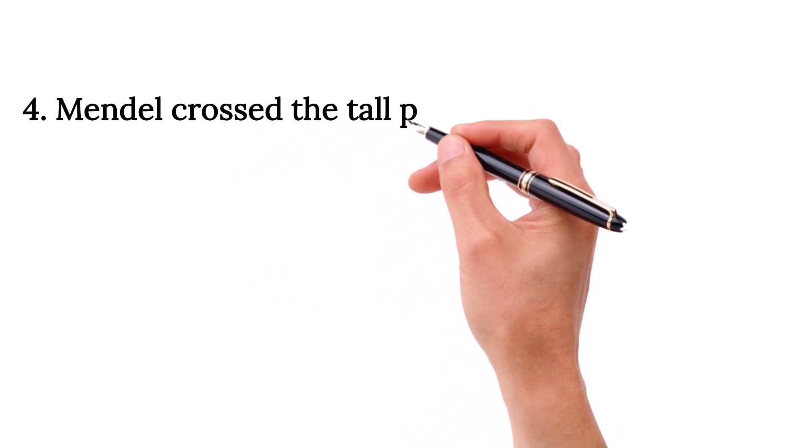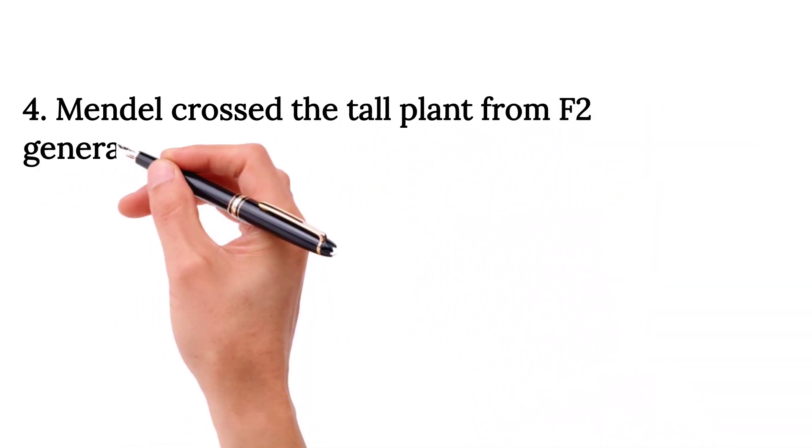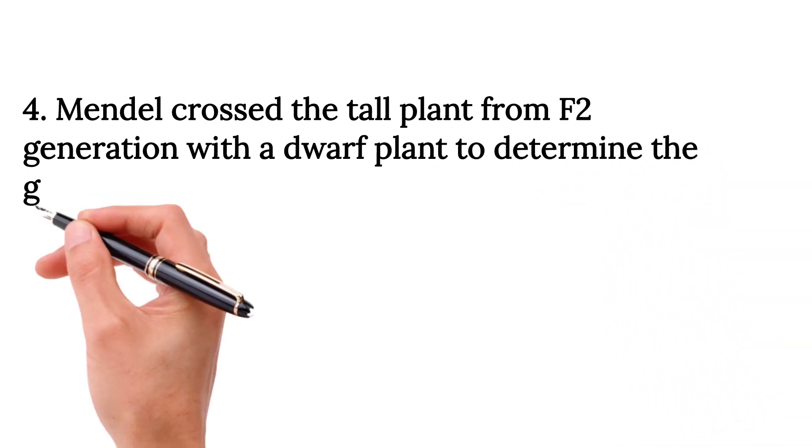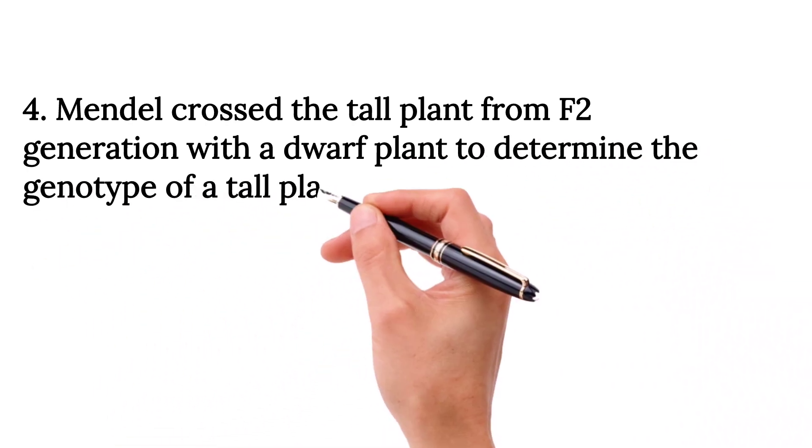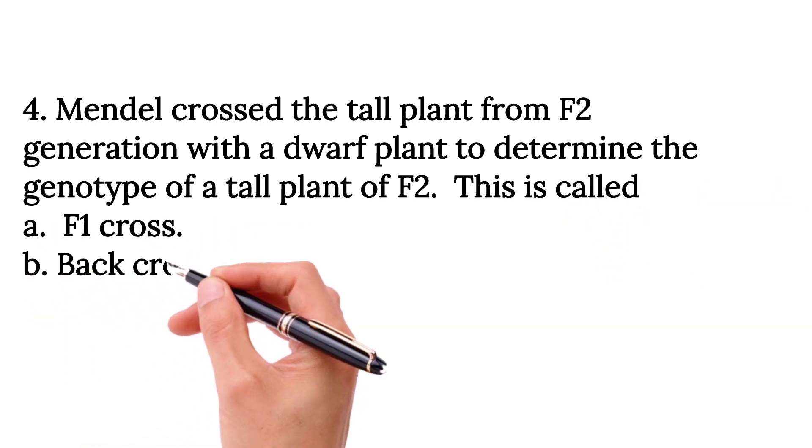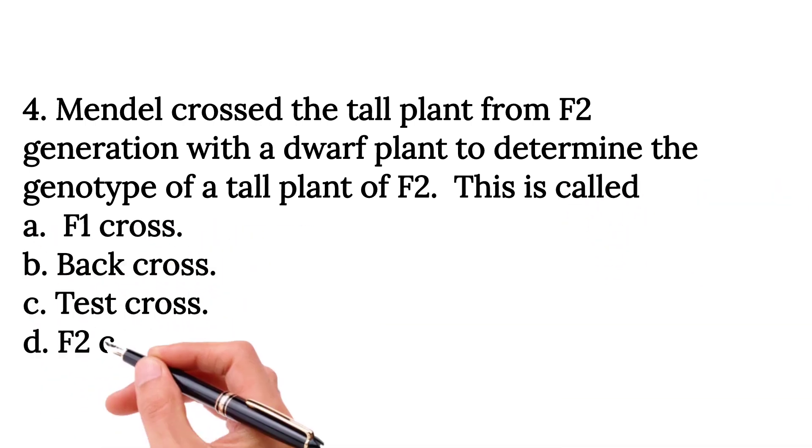Mendel crossed the tall plant from F2 generation with a dwarf plant to determine the genotype of the tall plant of F2. This is called Option A, F1 cross, Option B, back cross, Option C, test cross, and Option D, F2 cross.